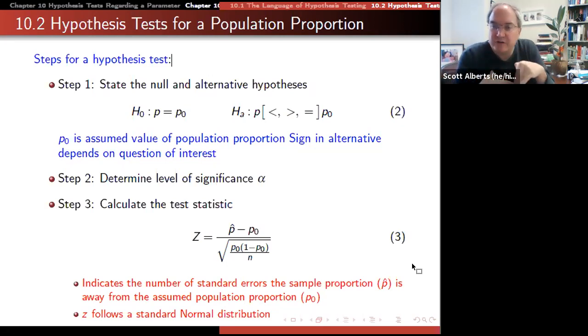This is the reverse of the confidence interval we did in chapter nine. There we said, here's data - what are the reasonable values we could expect that true value to have? Here, we're going to have a specific true value and investigate whether that's reasonable.